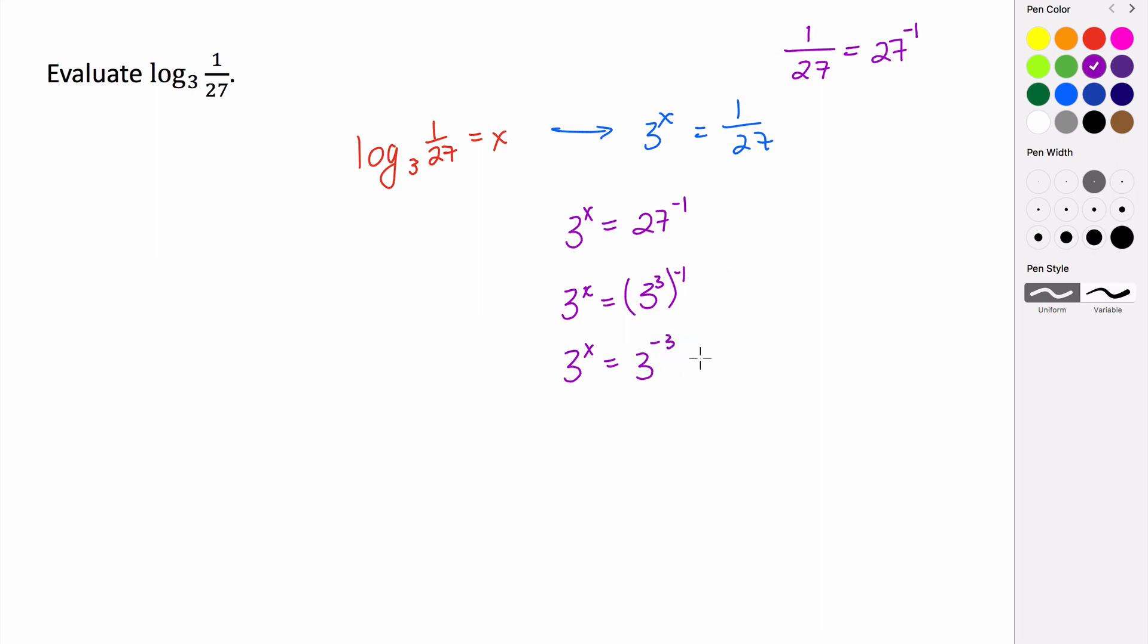And using our properties that says if you have two exponential expressions that are equal to each other and have the same base, then all we have to do is set the exponents equal to each other. And so we get that x is equal to negative 3. So this is saying that log base 3 of 1 over 27 is equal to negative 3. So this whole thing is equal to negative 3.